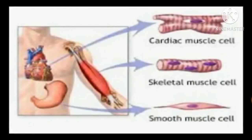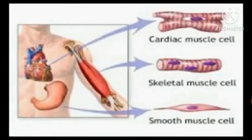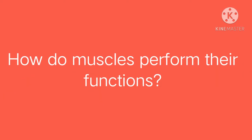Third, smooth muscles: these muscles are involuntary and are present in the internal organs other than the heart — for example, muscles of the stomach, intestine, blood vessels, uterus, etc. Various vital functions of our body of which we remain quite unaware are carried out by these special muscles.